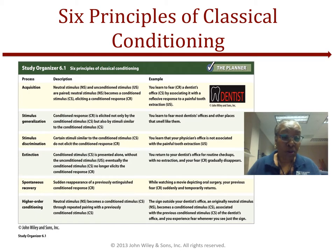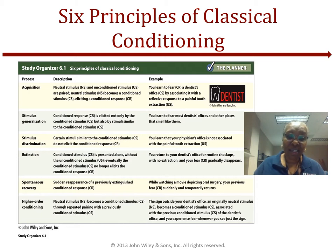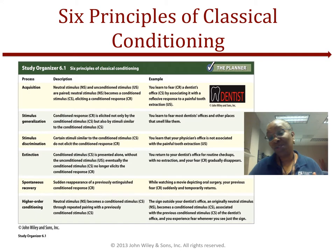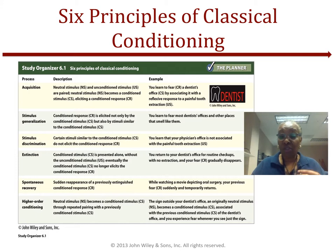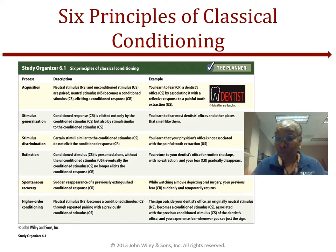Stimulus discrimination means there are stimuli that are close to the conditioned stimulus that still won't elicit a conditioned response. For example, we can tell the difference between the dentist's office and the doctor's office — because you've never had problems with the doctor's office, you're able to discriminate between the two without a stimulus generalization. In terms of Little Albert: he couldn't take those white rabbits, but he loved brown monkeys. He was able to discriminate between the two — furry animals he wasn't afraid of.